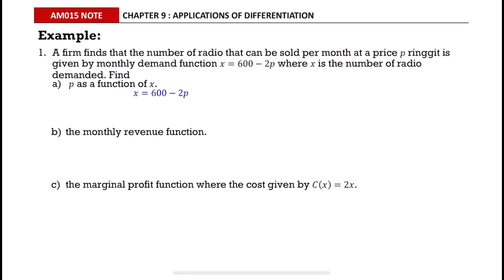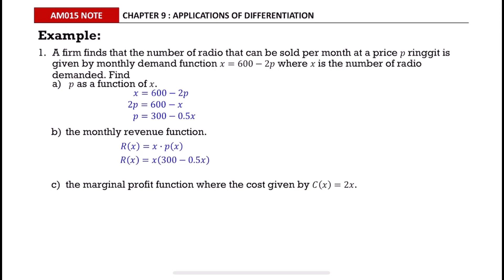Express p as the subject. For part (b), find the monthly revenue function. The monthly revenue function is given by the formula R(x) = x · p(x), so substitute the price-demand function into the formula and expand.